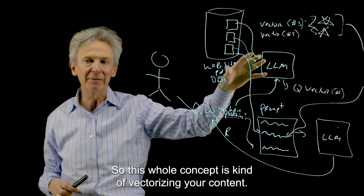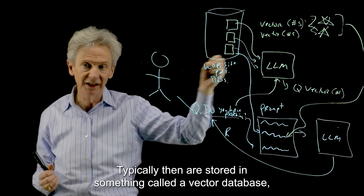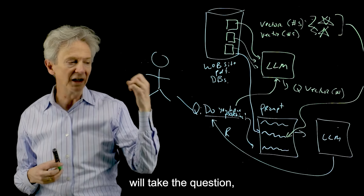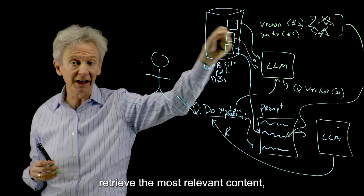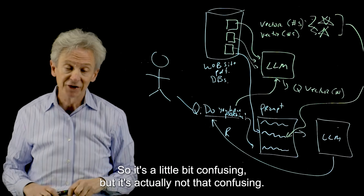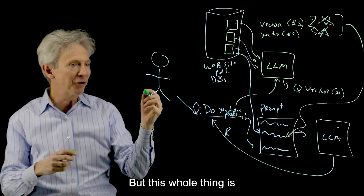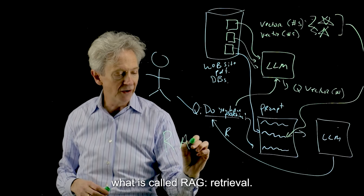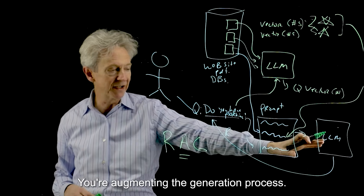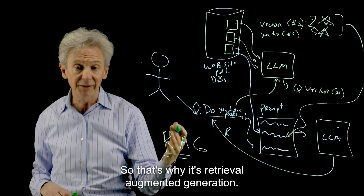Those become the subset of your content used as part of the prompt before the prompt. This whole concept is vectorizing your content, and those vectors are typically stored in something called a vector database, which is a representation of your content in numeric form. The RAG system will take the question, retrieve the most relevant content, make that part of the prompt before the prompt, send that to the LLM, and you'll get a good response back. That's why it's called retrieval augmented generation — you're retrieving the relevant documents from your content and augmenting the LLM's ability to do generative AI based on those retrieved documents.